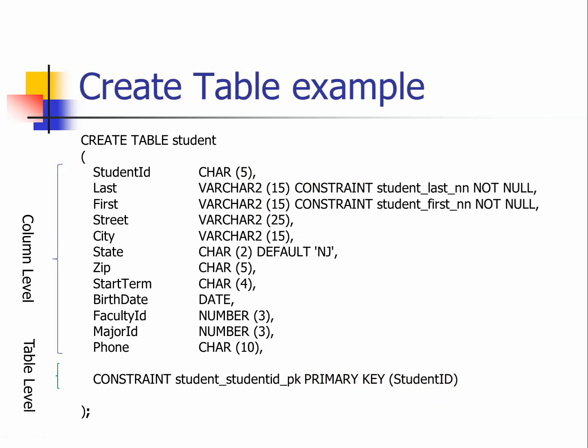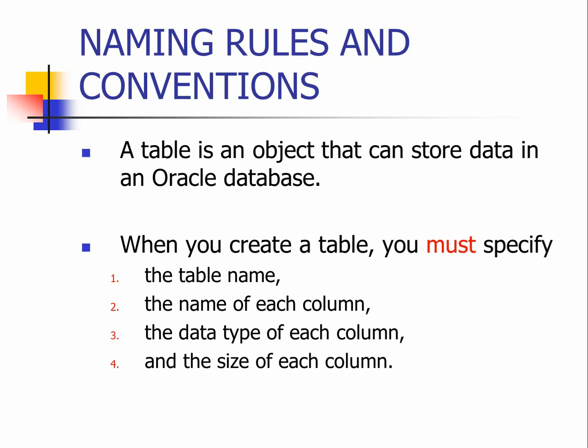This gives you an overview of what it looks like to create one table. In your database you will have more tables that need to be created, and they connect with each other through foreign keys. A table is an object that stores data in Oracle. When creating a table you must specify the table name, the name of each column, the data type of each column, and the size of each column. Constraints are optional at creation time — it is totally possible to create a table without any constraints and add them later.